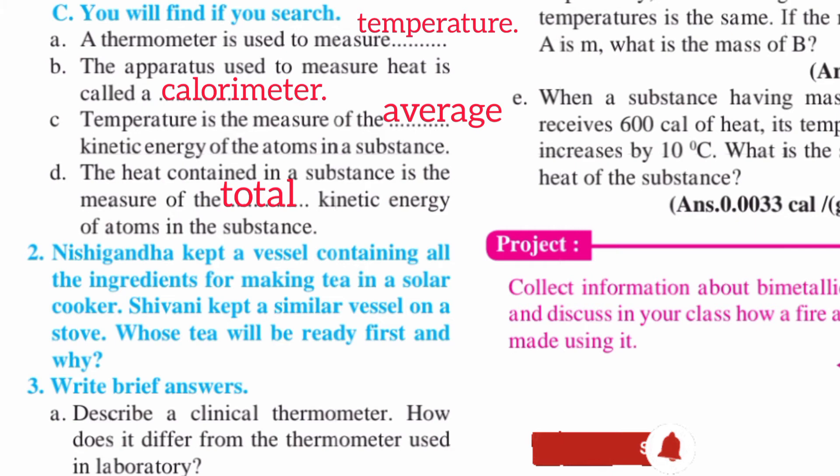Question C: You will find if you search. A: A thermometer is used to measure temperature. B: The apparatus used to measure heat is called a calorimeter. C: Temperature is the measure of the average kinetic energy of the atoms in a substance.